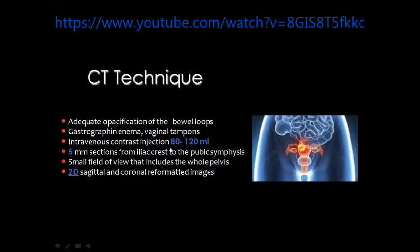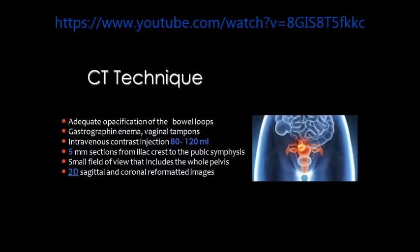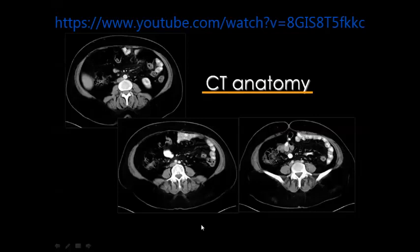In many conditions we need to inject contrast medium. The pelvis is scanned from the level of the iliac crest down to the pubic symphysis or even further to cover the area of the anal canal and the ischiorectal fossa. We use a small field of view to include the whole pelvis and delineate the organs in a good manner. Sometimes we need sagittal and coronal reformatted images, which are usually helpful in almost all cases.